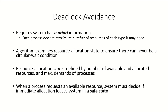In the previous video we discussed deadlock prevention, where by invalidating any one of the four necessary conditions the system takes care that deadlock is prevented. In this video we are going to take a look at deadlock avoidance algorithms. These algorithms require that the system has prior information of the resources which would be required by the processes. Each process has to declare the maximum number of resources of each type it may need before execution, and this information is used by the system to avoid deadlock.